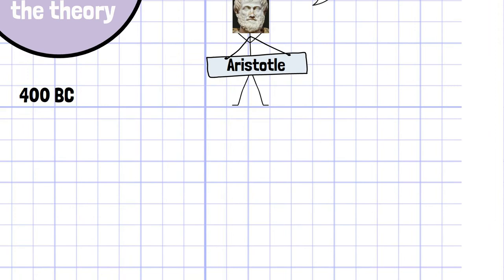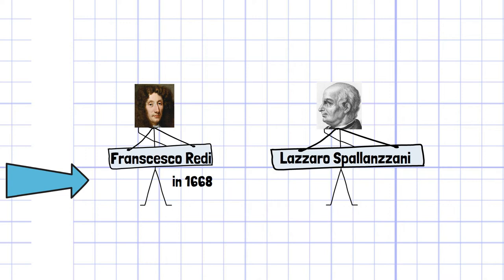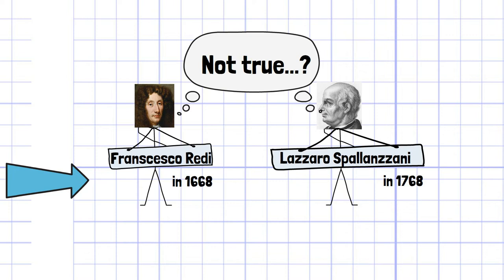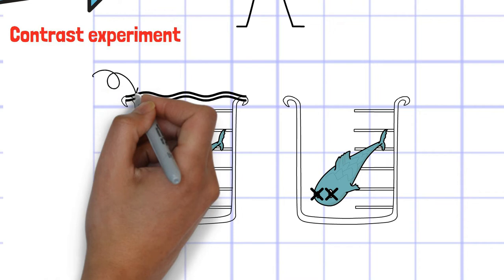However, starting with the experiment by Franziska Reddy and Lazaro Spallanzani, the experimental verification to deny this theory has begun. Franziska Reddy introduced a notion of contrast experiment, which is the foundation of today's science. He put two dead fish in separate containers and sealed one of them after covering with fabric and left another open.